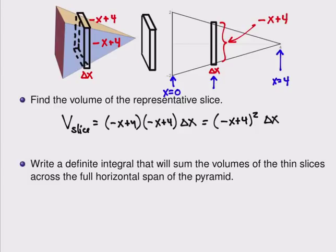A definite integral adds up all of those as their thickness goes towards 0. So in order to write the full volume, we're going to write an integral from x equals 0 up to x equals 4 of the volume of one slab, which is negative x plus 4 quantity squared, and the delta x becomes the dx in the definition of the integral. So here we've turned this question about volume into an integral that we know how to evaluate.